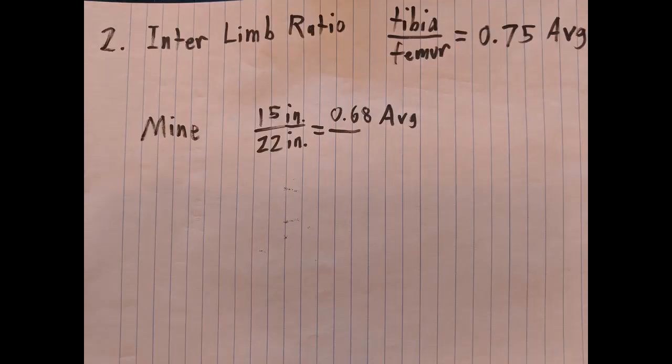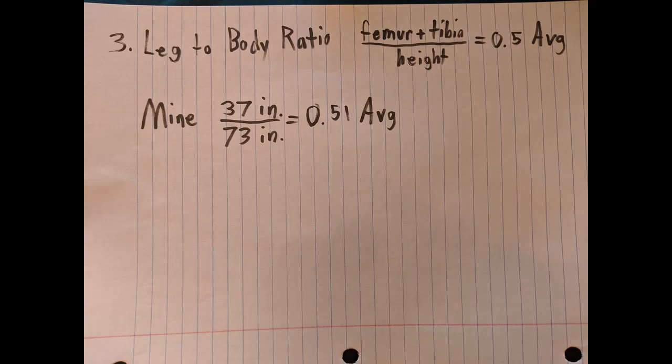Formula number two: inner limb ratio, which is tibia divided by femur. It should come out to 0.75. My tibia was 15 inches divided by my 22-inch femur — my femurs were a little longer than they should be, so my average came to 0.68.